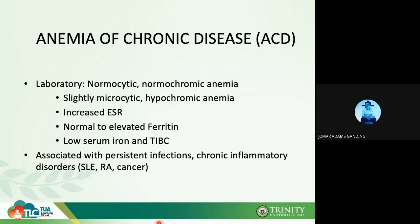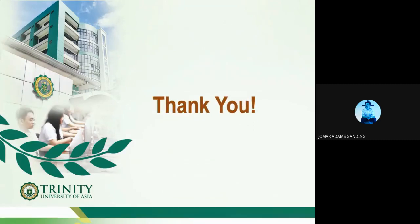Anemia of chronic disease is associated with persistent infections, chronic inflammatory disorders such as systemic lupus erythematosus, rheumatoid arthritis, and cancer. During inflammation, erythropoiesis can also be diminished because cytokines produced during immune response inhibit RBC production. Additionally, those cytokines can shorten RBC lifespan, further aggravating the anemia. This is all found in Chapter 17. Please take a quick break before proceeding to the next video.